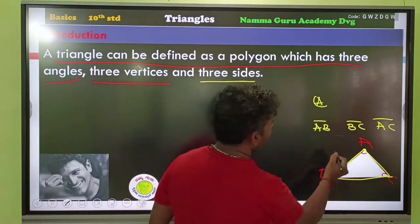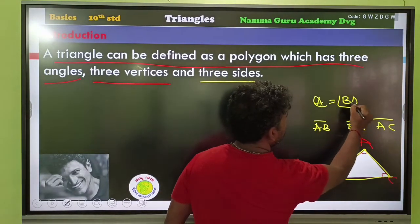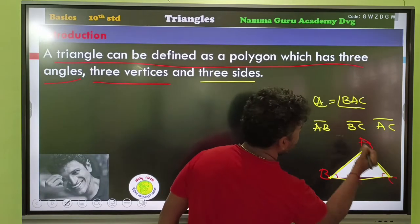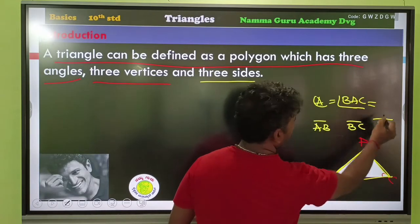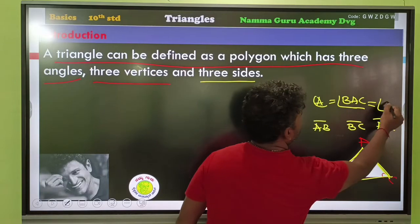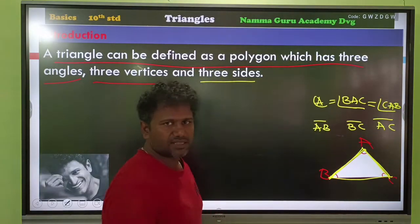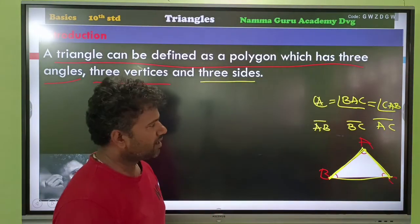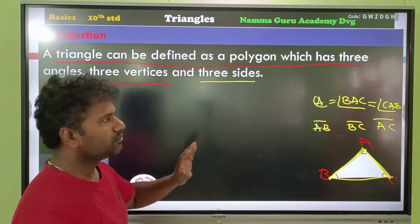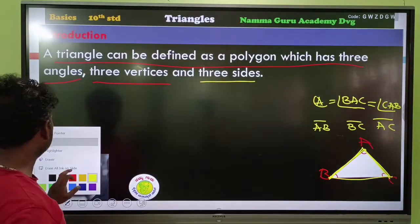AB is one side, BC is another side, and AC is another side. The angle at A is angle BAC, and the angle at B is angle BAC. It is a polygon which has 3 sides, 3 angles, and 3 vertices.